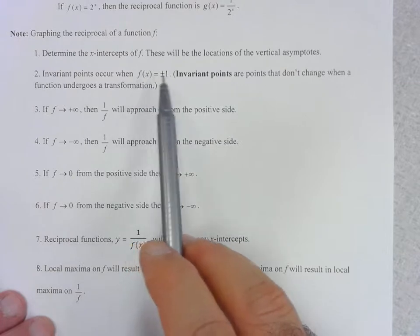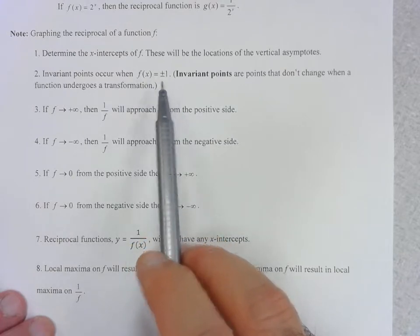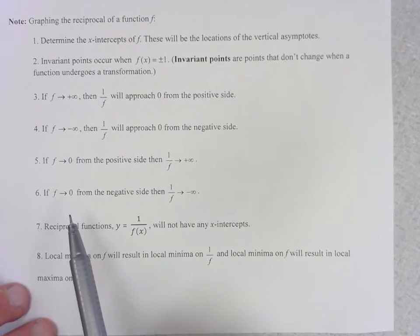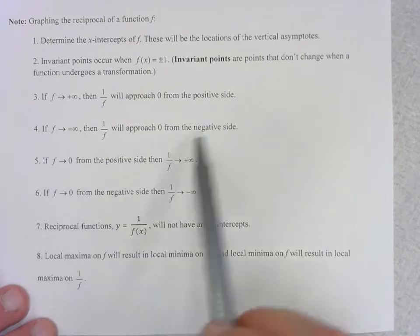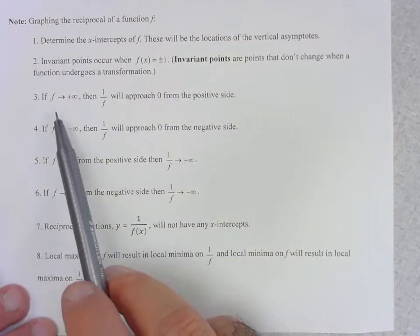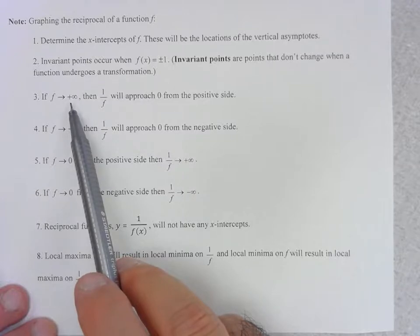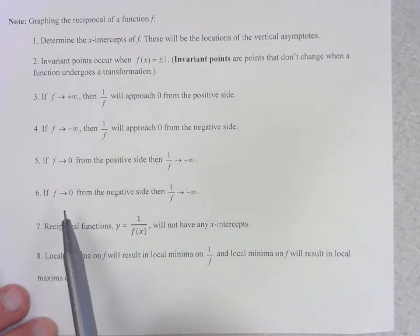Wherever f is plus or minus 1, the reciprocal will also have that y value and this tells you how to interpret the behavior of the function. If f is approaching positive infinity, then 1 over f is going to approach 0.